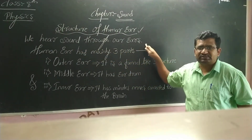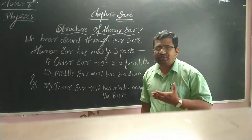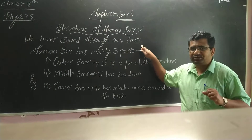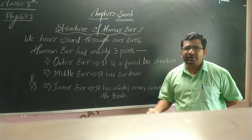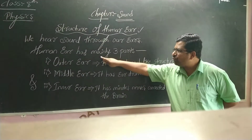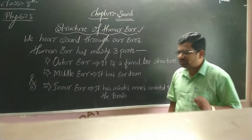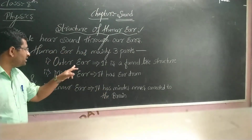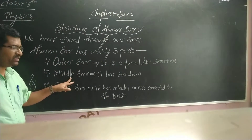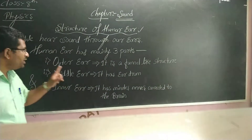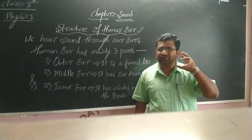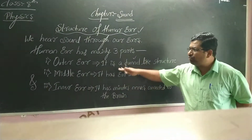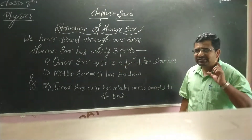We hear sound through our ears. We have two ears — a left ear and a right ear. The ear is an organ that helps us hear different types of sounds. The human ear has mainly three parts: the first part is the outer ear, the second is the middle ear, and the third is the inner ear. Whatever we see from outside the body is called the outer ear.